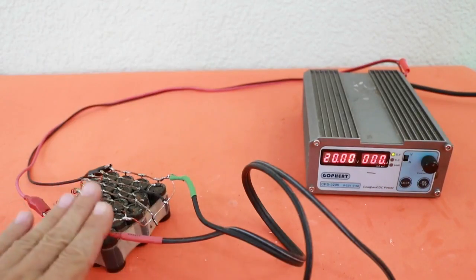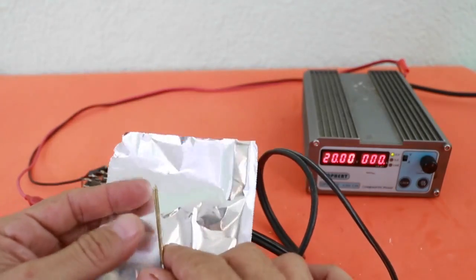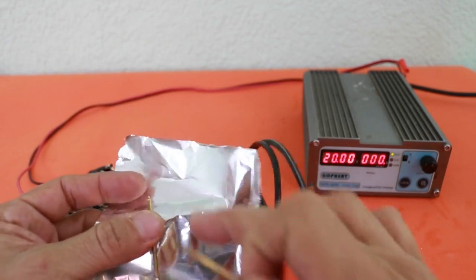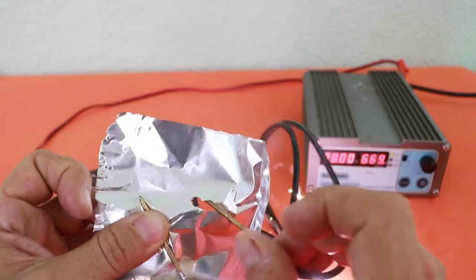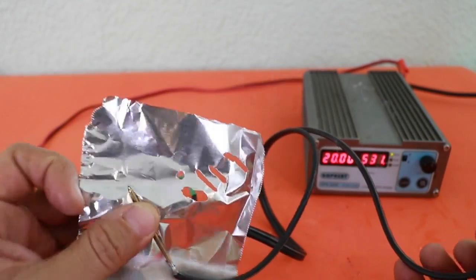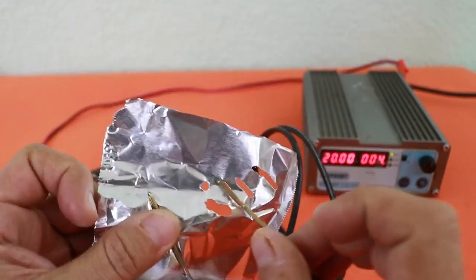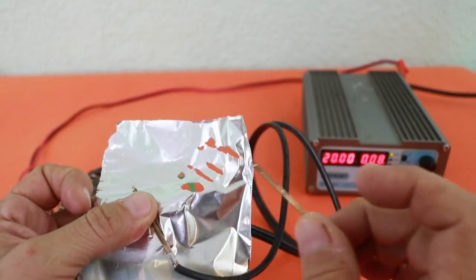However, the capacitor bank does contain a lot of energy. Let me demonstrate with this piece of aluminum paper. You can see how the aluminum paper is vaporized by the energy in the capacitor bank.